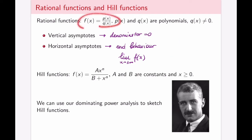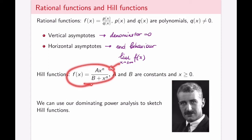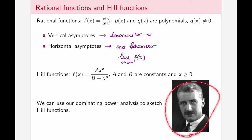In terms of rational functions there are infinitely many different types, but we will be interested in particular in so-called Hill functions. These are rational functions of a very particular kind where a and b are constants, and the powers of x are the same on top and the bottom. Hill functions are named after the British physiologist Archibald Hill, who studied them in a variety of applications, and in particular in protein binding and muscle physiology, for which he received the Nobel Prize in medicine in 1922.